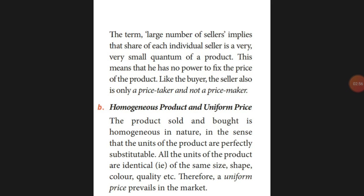Next is homogeneous product and uniform price. That means a similar product should be there in perfect competition. There should be a perfect substitute with the same size, shape, color, and quantity. For example, salt is substituted only by salt. Other products like soap and paste come in the same flavor, same size, and shape — many substitutes can be there. That's why homogeneous products with a uniform price should be there in perfect competition.